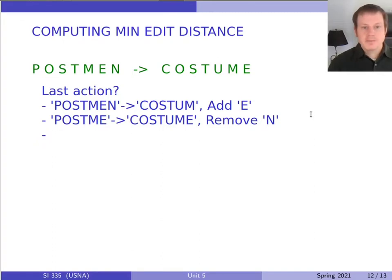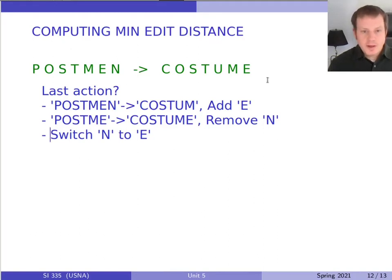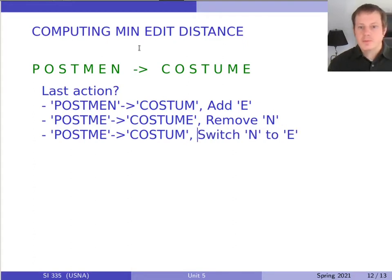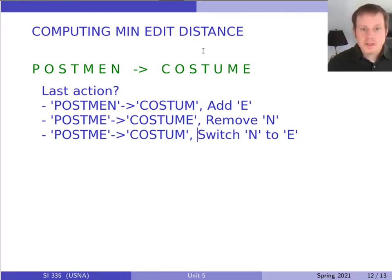The third possibility is that we change the last letter — we switch 'n' to 'e.' What would happen before that? We've dealt with the last letter of both words, so what would have happened before is we turn the first part of both words into each other: 'postma' gets turned into 'costum', and then we do that switch. Those are the only three possibilities for what the last action can be: remove the last letter from the first word, add the last letter from the second word, or switch the last letter from one word into the other.